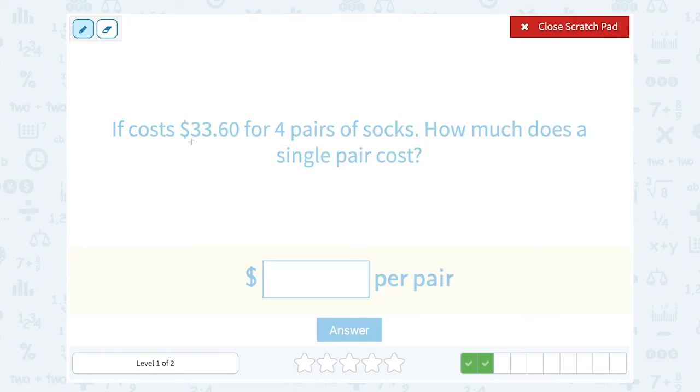If this is our price for four pairs, we would need to divide to figure out our cost for a single pair, meaning just one pair. So let's set this up. $33.60. And we want to divide that by four.